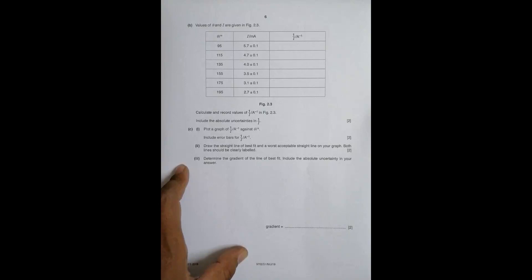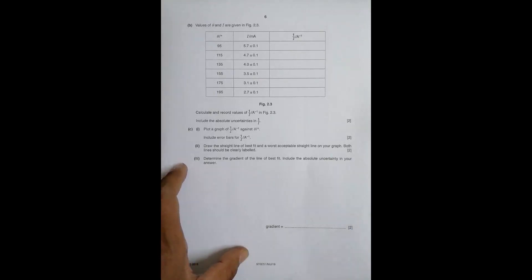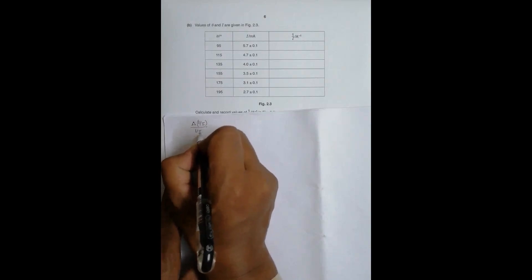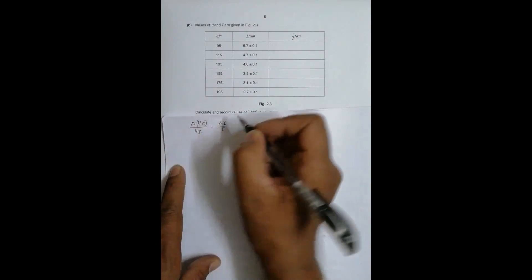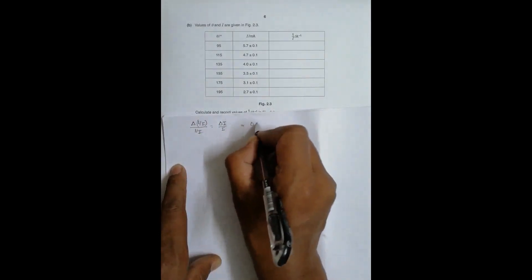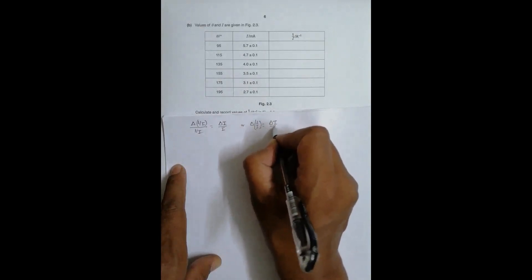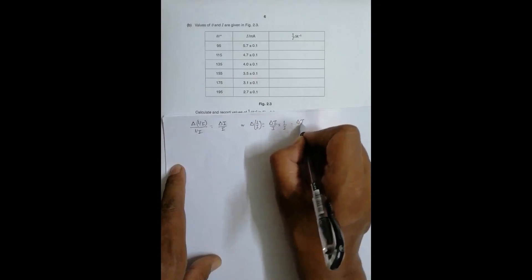Our job is to find the value of 1/I and express the uncertainty as well. When we have uncertainties or errors, we first need to express the errors, and then calculate the main quantity. The error in 1/I is derived as: Δ(1/I) / (1/I) = ΔI / I, which gives Δ(1/I) = ΔI / I².